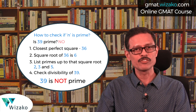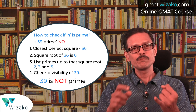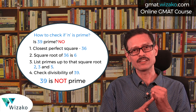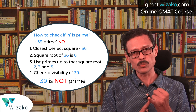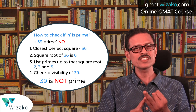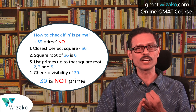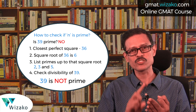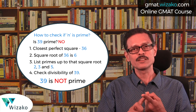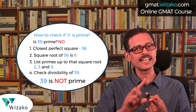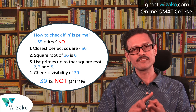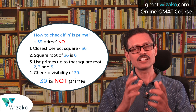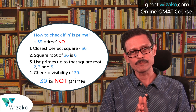Let's quickly summarize the 4 steps. Step 1: pick a perfect square closest to the number, lesser than the number. Step 2: find the square root of this. Step 3: list down primes up to the square root. Step 4: check whether any of those primes will divide the number. If none of the primes divide the number, the given number is prime.